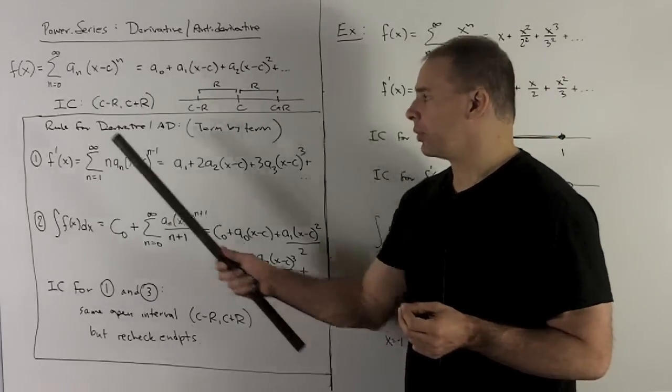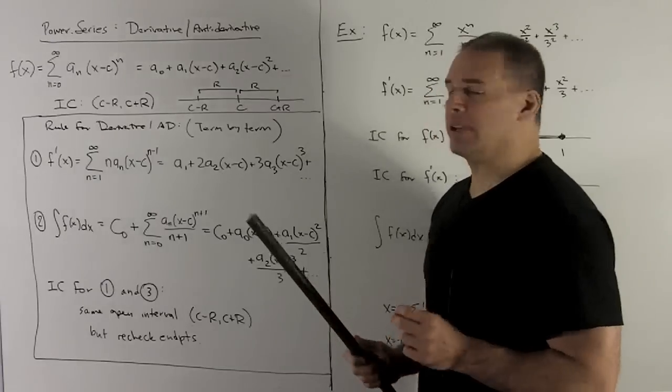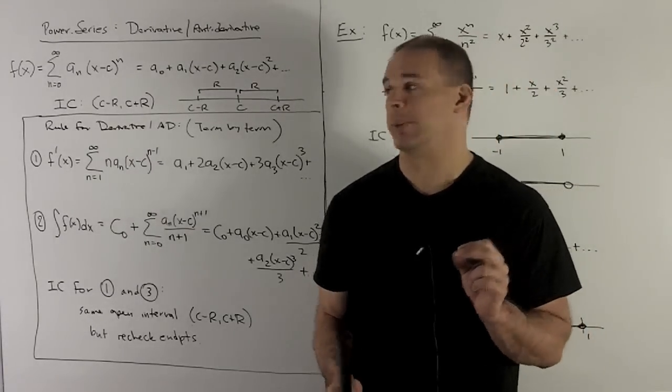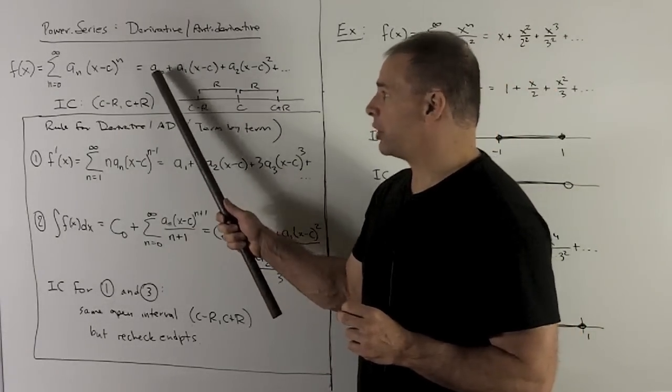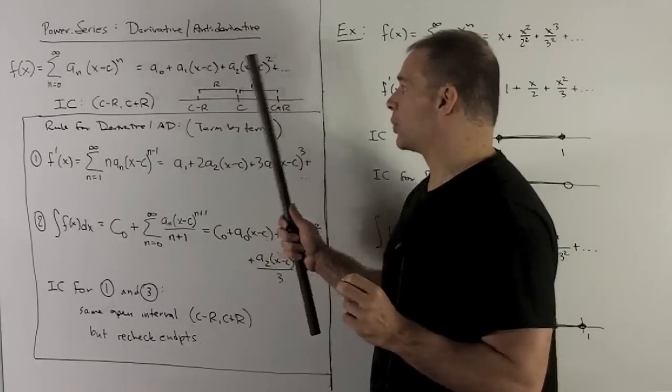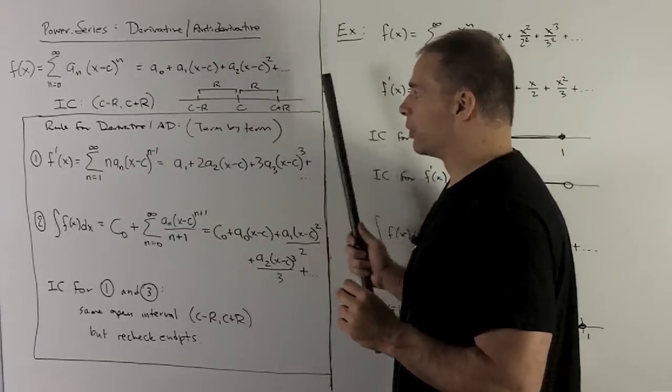What's the rule going to be? The rule for doing a derivative or antiderivative is just term by term, meaning like how you would do for a polynomial. You're just going to take the term you're looking at, find its derivative or antiderivative, and then just go through the next one to the next one, add up your results.